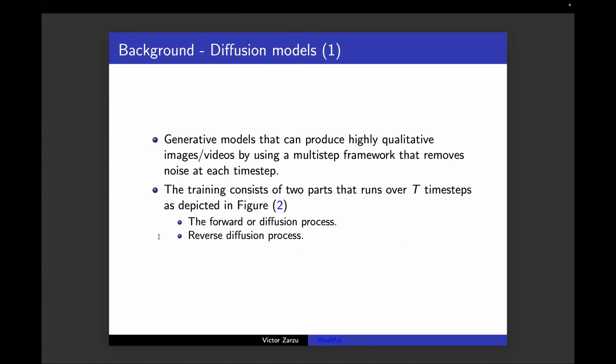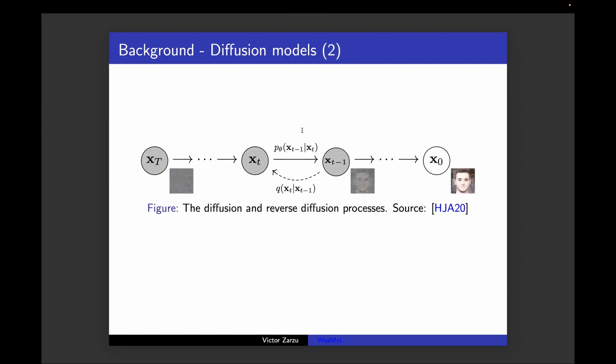I will talk about the background now. All the work is done with diffusion models, which are generative models that can produce images or videos using a multistep framework that removes noise at each timestep. There are two parts of this process. During training there is the forward and the reverse process, which can be seen in this image. At training time you have an initial image, the one on the right, and you progressively noise it with some variant scheduler over multiple steps T, which is usually 1000 or more, and you end up with pure Gaussian noise.